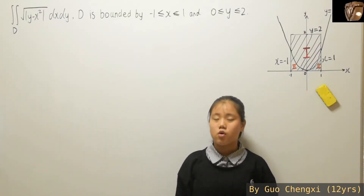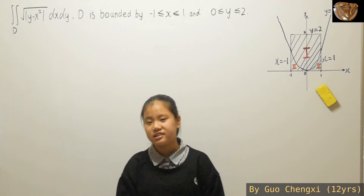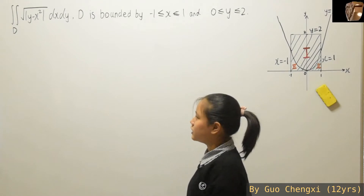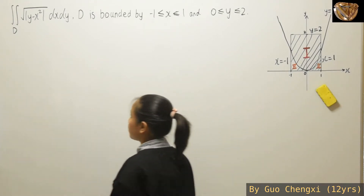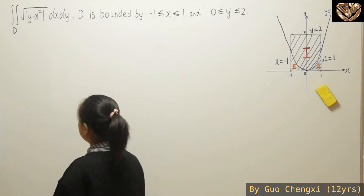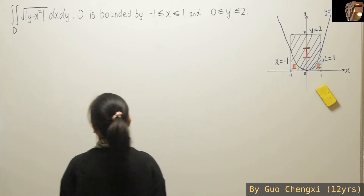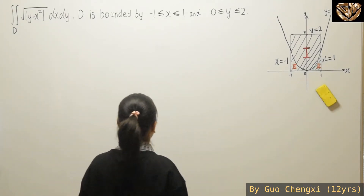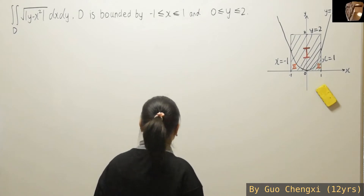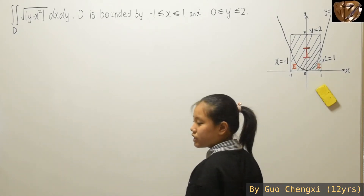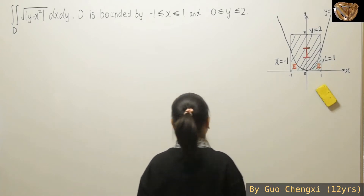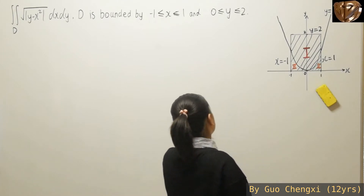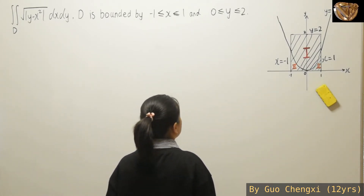For this lesson, we will be continuing with the techniques and applications for definite integration. We will have this example where we have the double integration over region D of square root of the modulus of y minus x squared, dx dy. D is bounded by x between negative 1 and 1, while y is between 0 and 2.